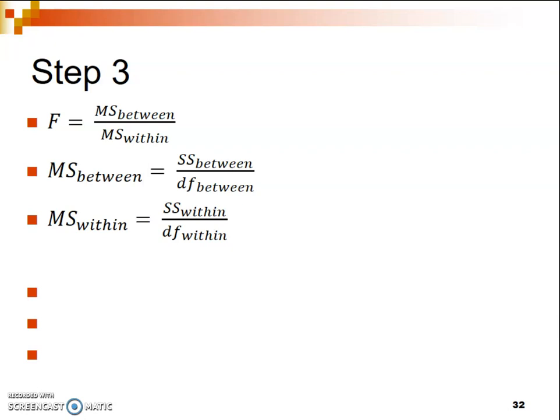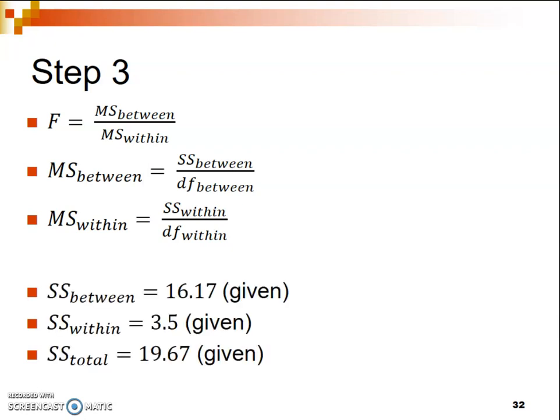If you're feeling enthusiastic about calculating ANOVAs by hand, I encourage you to check your textbook. However, for the purposes of this class, I am just going to give you the values for the various sum of squares that you'll need — the sum of squares between groups, the sum of squares within groups, and the sum of squares total. All of these values will be given to you in the question itself.